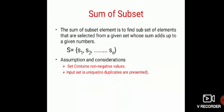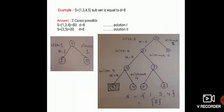Now let us take one example for the sum of subset problem. Here S = {1, 3, 4, 5} and the given positive integer d = 8. If I take 1, 3 and 4, the total is 8, so our first solution is found. If I take 3 and 5, the total is also 8, so the second solution is found. For this given set I got two possible solutions.